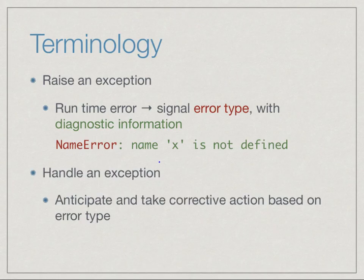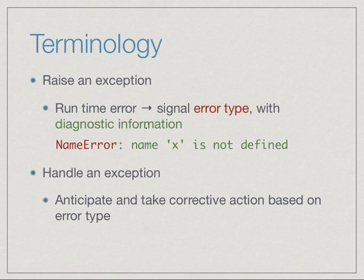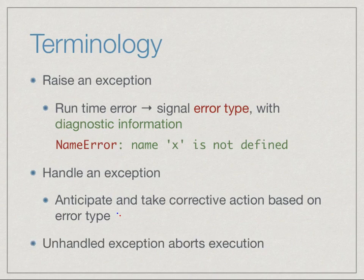When such an error is signaled by Python, what we would like to do is handle it from within our program — anticipate and take corrective action based on the error type. We may not want to take the same type of action for every error type, so it is important to know whether it is a NameError or IndexError or something else. If we get an exception which we have not explicitly handled, then the Python interpreter has no option but to abort the program. An unhandled exception causes execution to abort.